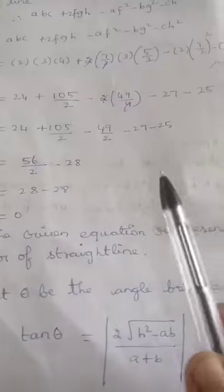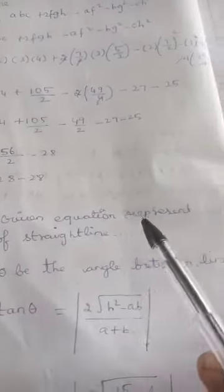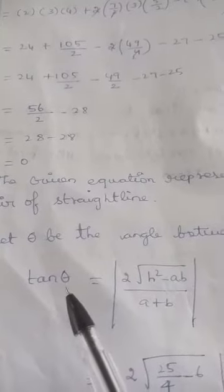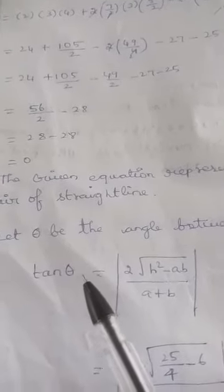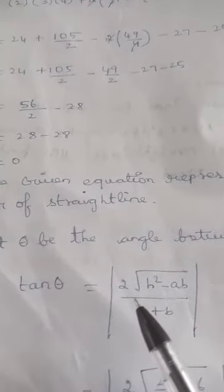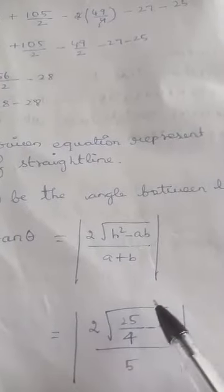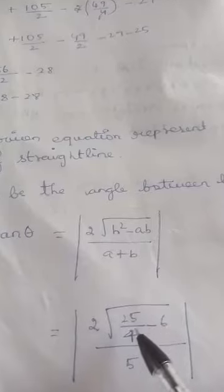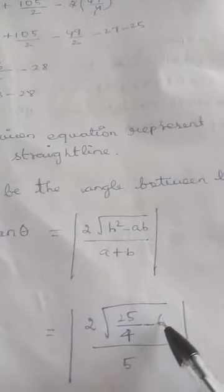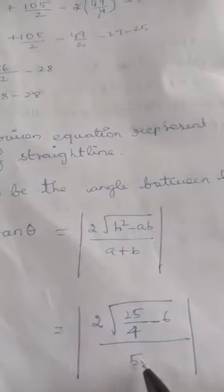Now to find the angle between the lines. The formula for the angle between a pair of straight lines is: tan θ = 2√(h² - ab)/(a + b). Substituting: tan θ = 2√((5/2)² - 2×3)/(2 + 3) = 2√(25/4 - 6)/5.